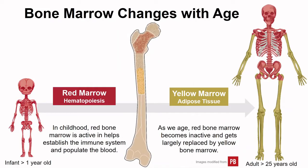One of the ways our bones change with age is the composition of bone marrow. When we're tiny babies we need a lot of red bone marrow to help us establish our immune system and populate our blood. It's part of the lymphatic system and something more present in younger individuals. As it becomes inactive it transitions in composition to be more like adipose tissue, changing to yellow marrow.